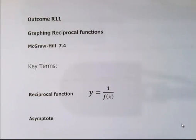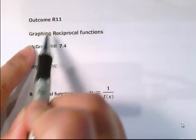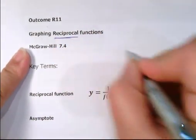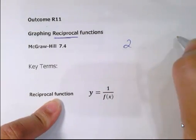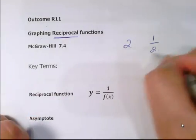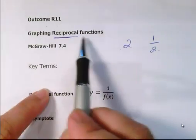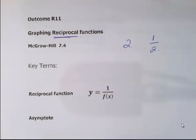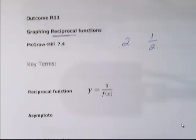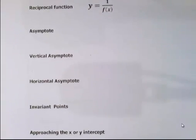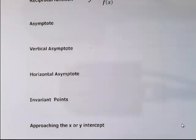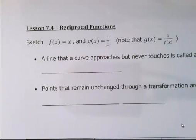Hello everyone. In this video we're going to be looking at outcome R11: graphing reciprocal functions. If you recall what a reciprocal is — for instance, if I have the number 2, the reciprocal is 1/2, and the reciprocal of 1/2 is 2. You'll find this in section 7.4 of your textbook. Key terms include: reciprocal function, asymptote, vertical asymptote, horizontal asymptote, invariant points, and the term 'approaching'.